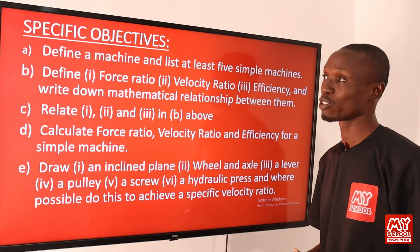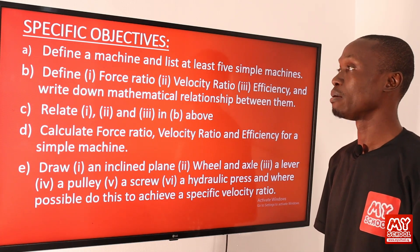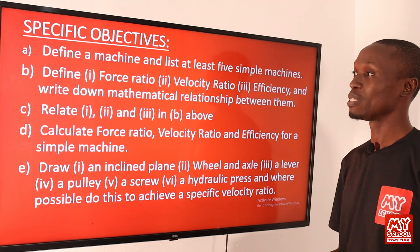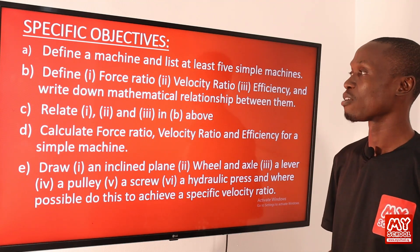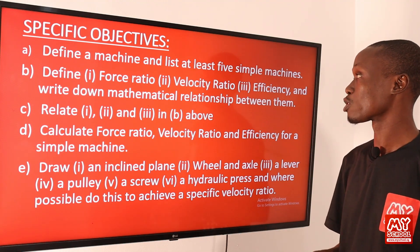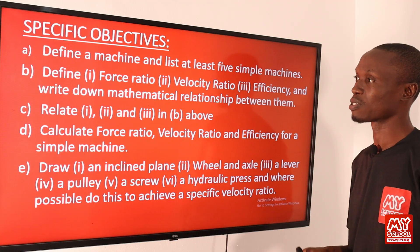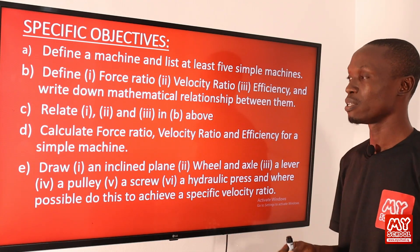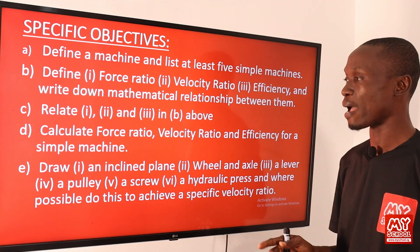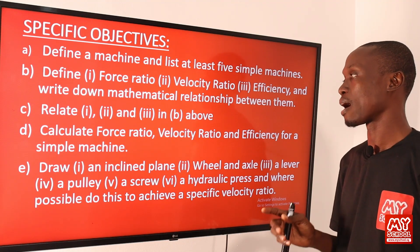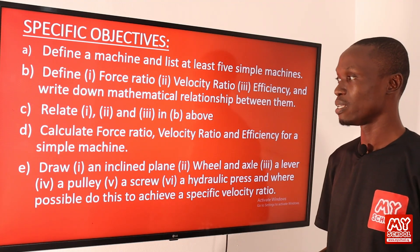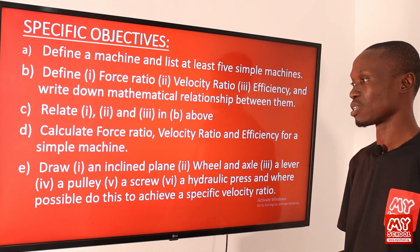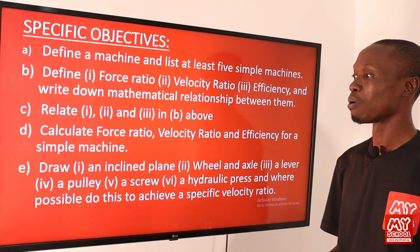At the end of this lesson, students should be able to: A. Define a machine and list at least 5 simple machines. B. Define (i) force ratio, (ii) velocity ratio, (iii) efficiency, and write down the mathematical relationship between them. C. Relate (i), (ii), and (iii) from B above. D. Calculate force ratio, velocity ratio, and efficiency for a simple machine.